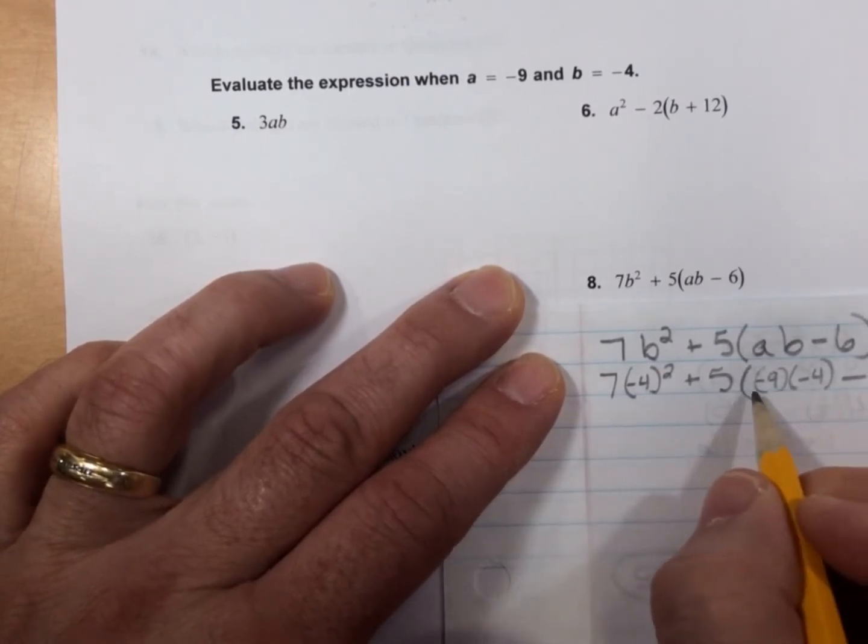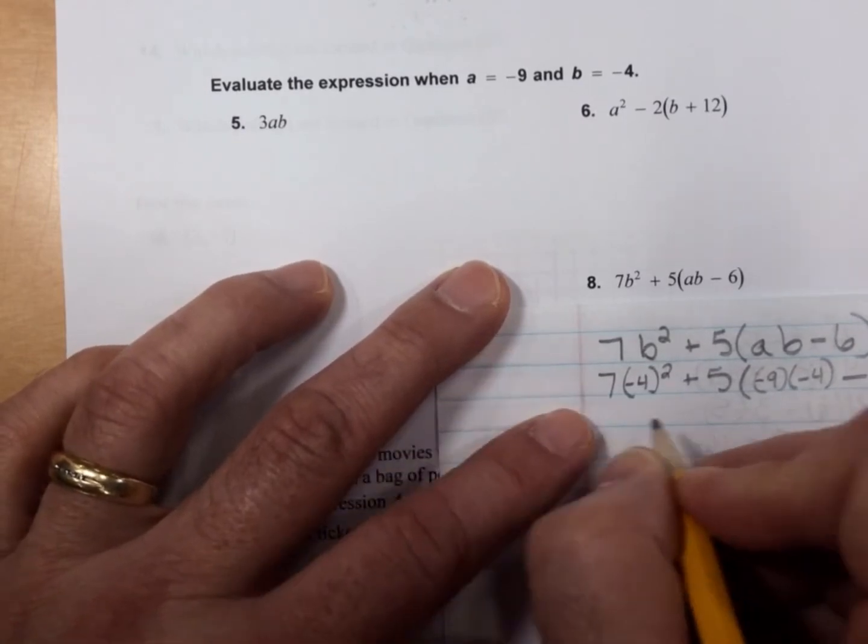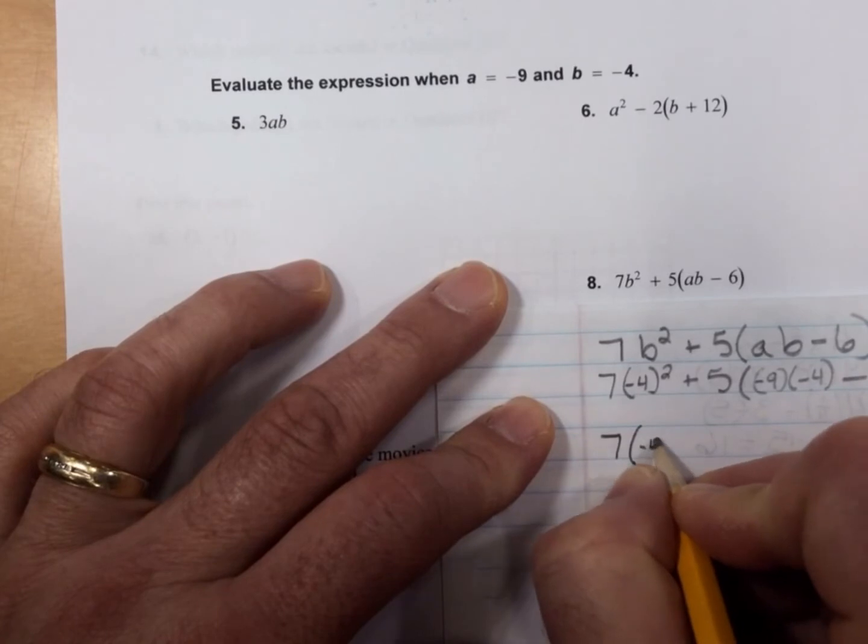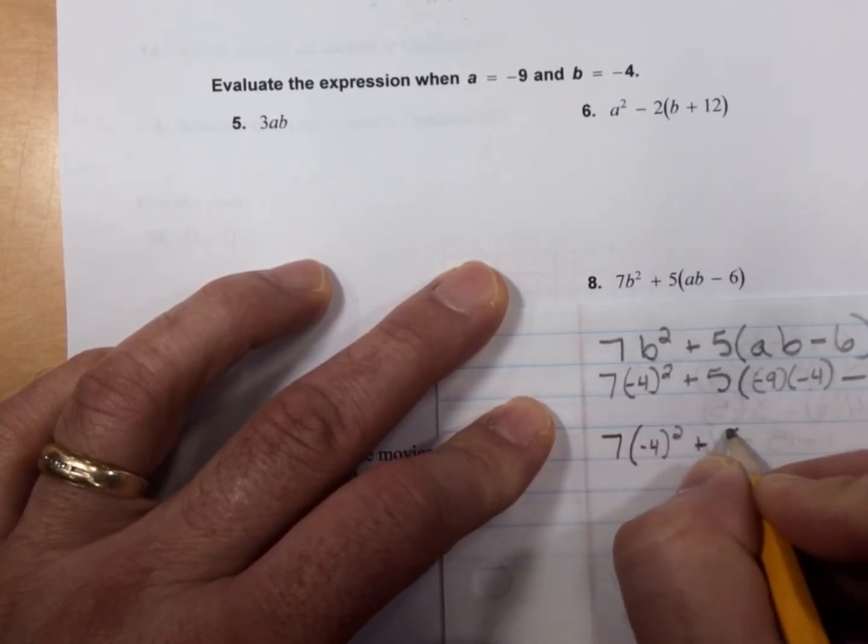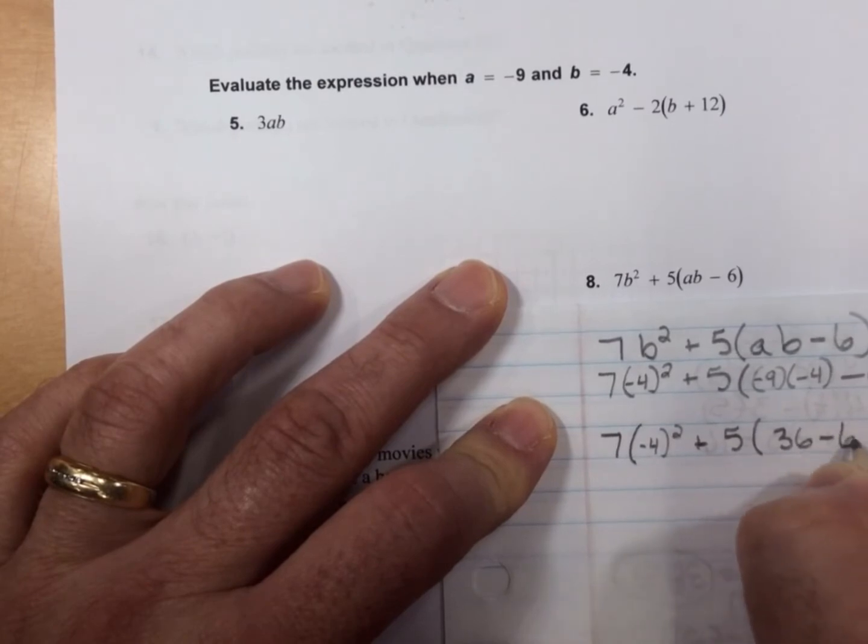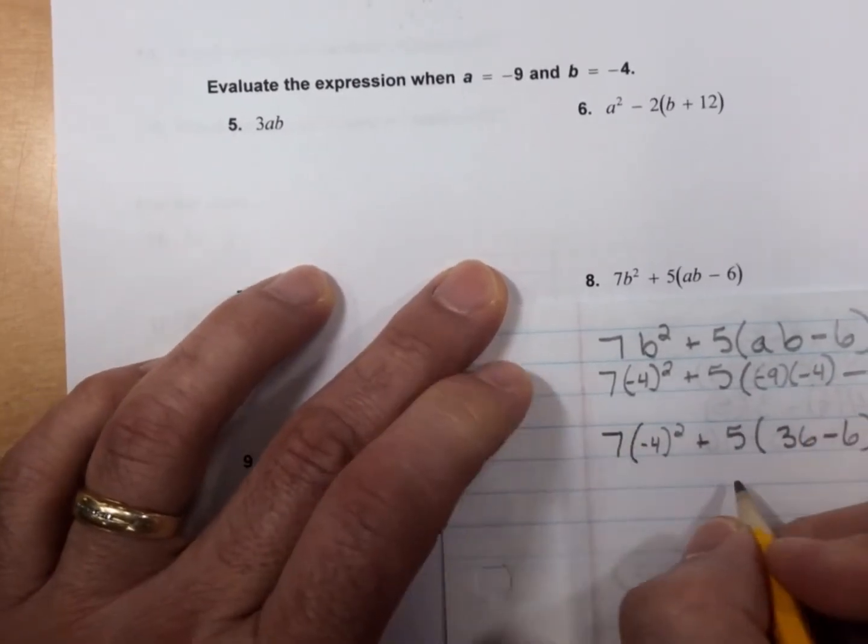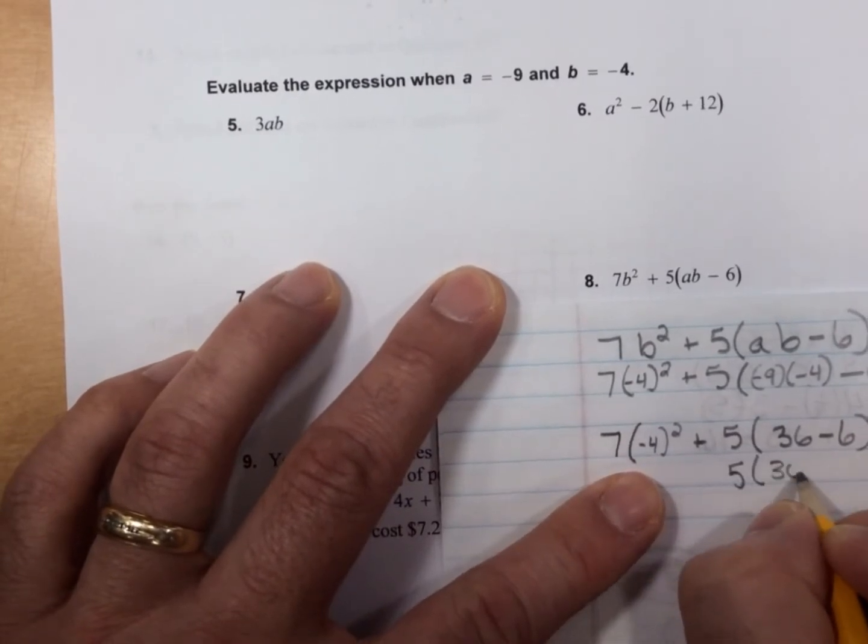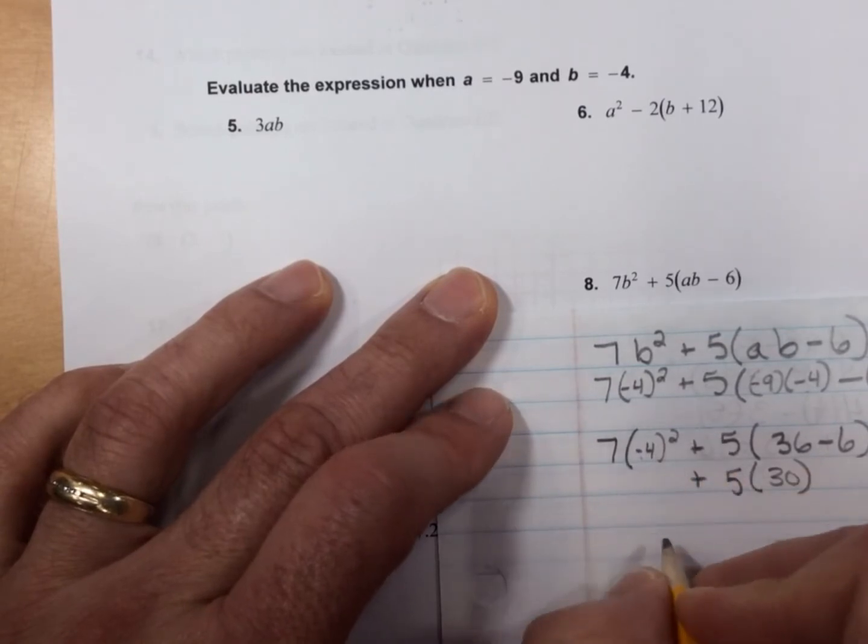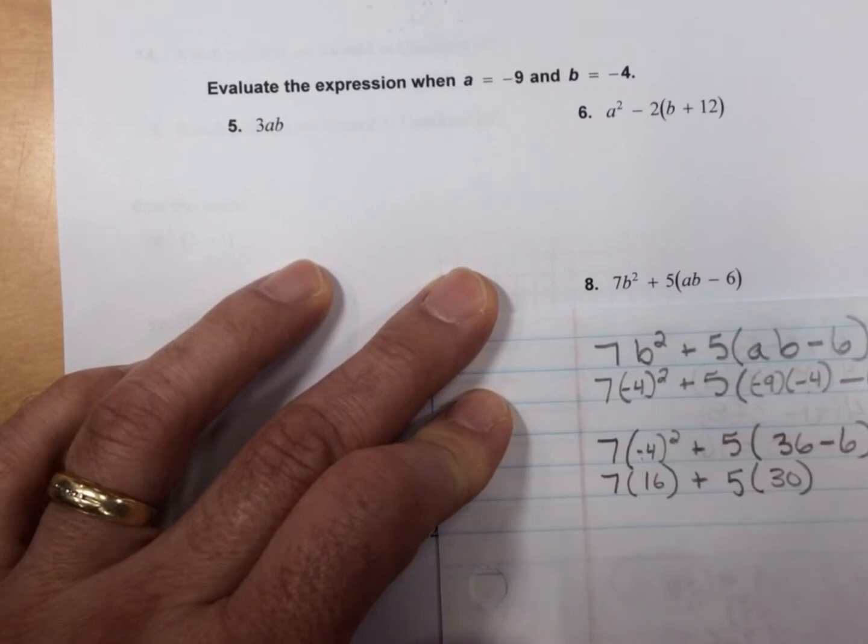So in parentheses first, -9 times -4 is positive 36. So now I have 7(-4)² plus 5 times 36 minus 6. 36 minus 6 is 30. So now I have 5 times 30 over here. -4 squared is 16. So I have 7 times 16 over here.